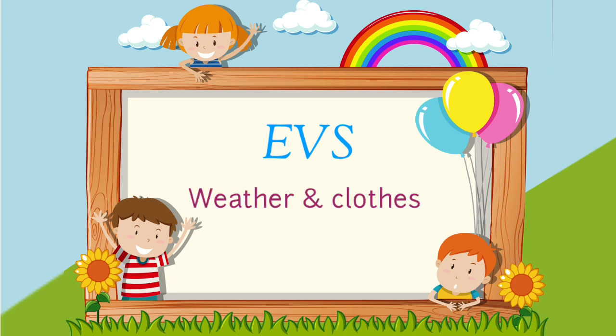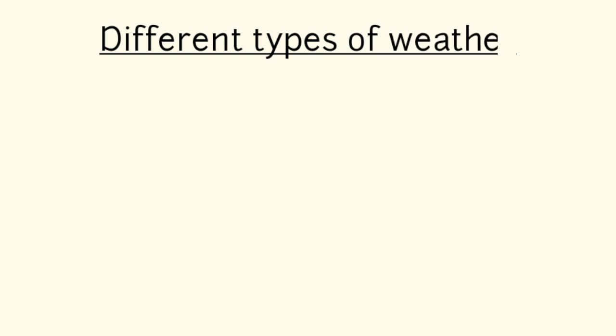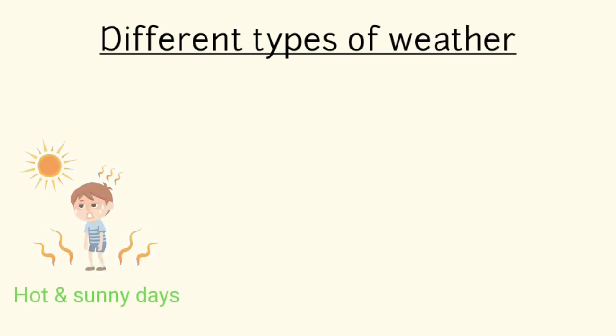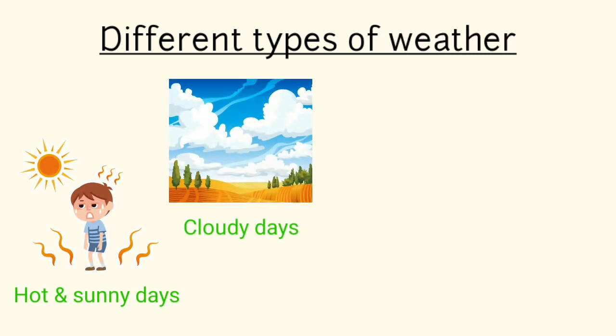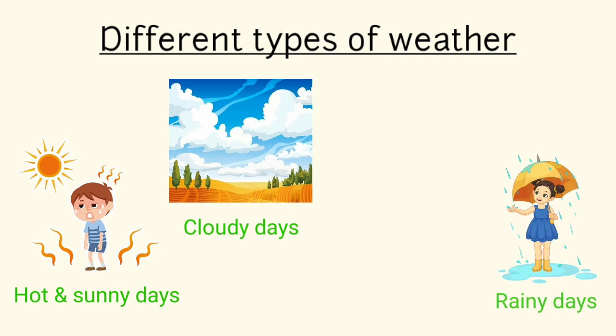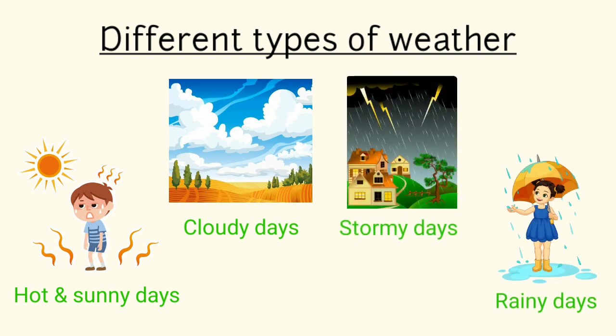Children, in part 1 of this chapter, we have learned about different types of weather, like hot and sunny days, cloudy days, rainy days, and stormy days.